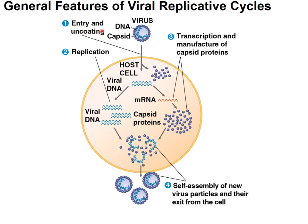The general feature is first entry and uncoating. Some viruses have a protein coat and some have a membranous envelope, but this example shows one that just has a protein coat. They attach to the cell, enter the cell, and then become uncoated — these proteins are removed and the genome is exposed. Once the genome is exposed to the cell contents, replication of the genome occurs, producing many, many different copies.